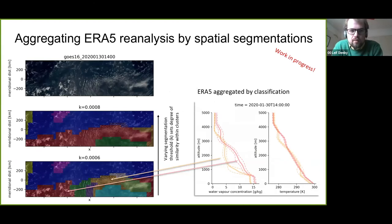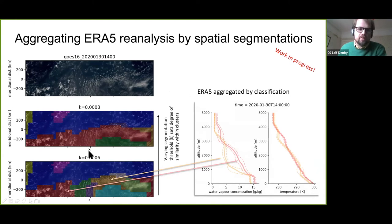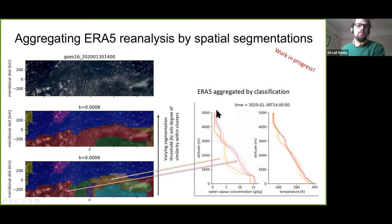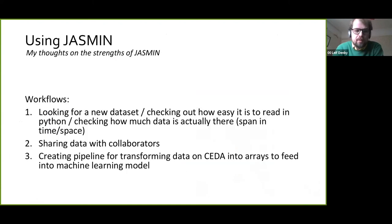The final step is understanding what causes these different patterns to form. I'm pulling out data from ERA5, reprojected onto the grid I'm using for the training network, and I can then look at how the moisture profile and temperature profile differ in different regions. This is where I've been using Jasmine quite a lot.